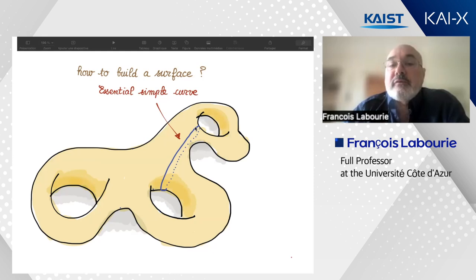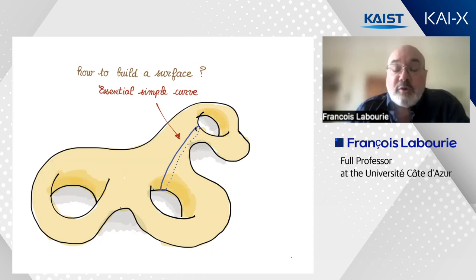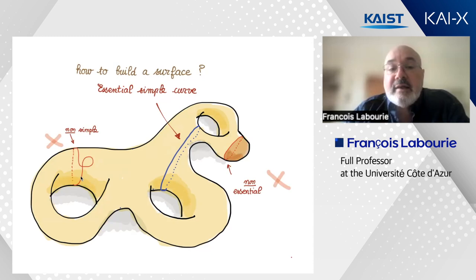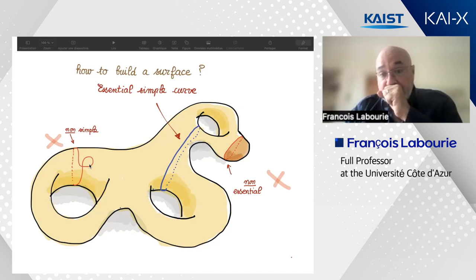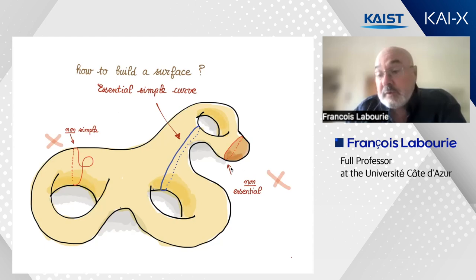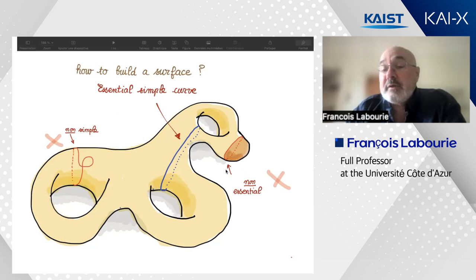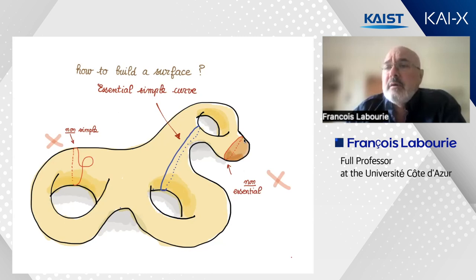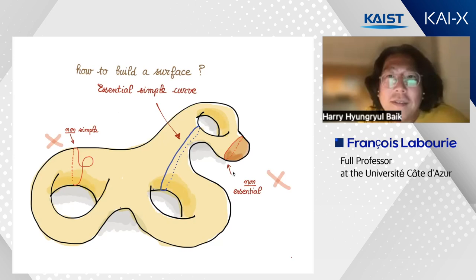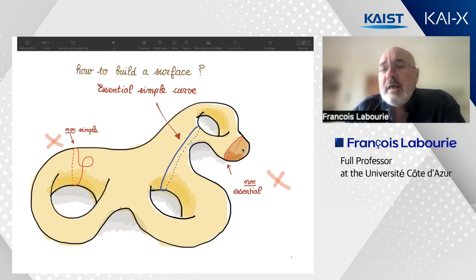You need to consider essential simple curves. Simple means the curve has no self-intersection — so this curve does not have self-intersections, this one does, so this one is not simple. Essential — or rather non-essential — is easier to define: a curve is non-essential when it bounds a disk. So this curve here is non-essential because it bounds a disk, and this one is essential because it doesn't.